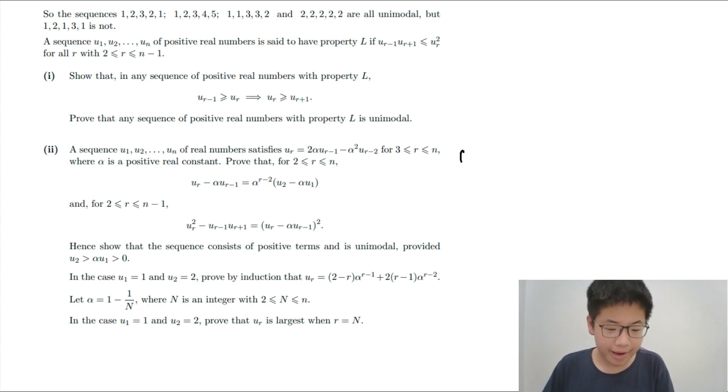We have UR minus alpha UR minus 1 equals to alpha UR minus 1 minus alpha UR minus 2. And then, you have, so basically, this is just a recurrence mechanism.